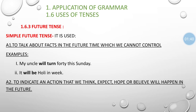Simple future tense: the action happens in a simple manner in the future. The structure is: Subject + will/shall + V1 + Object + full stop. Will + V1 or shall + V1 is used in this tense.